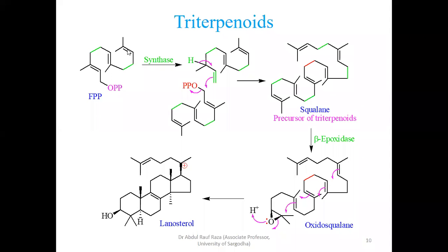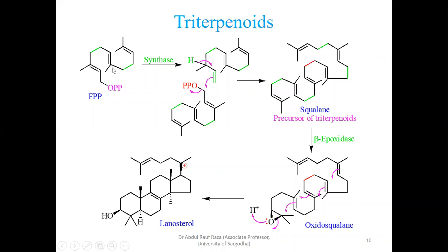But when you have one positive and one negative terminal, there is a flow of electrons. Very similar is happening here: one electron-deficient carbon and one electron-rich carbon — when they combine with each other we get our donor-acceptor reaction, which means head-to-tail addition.